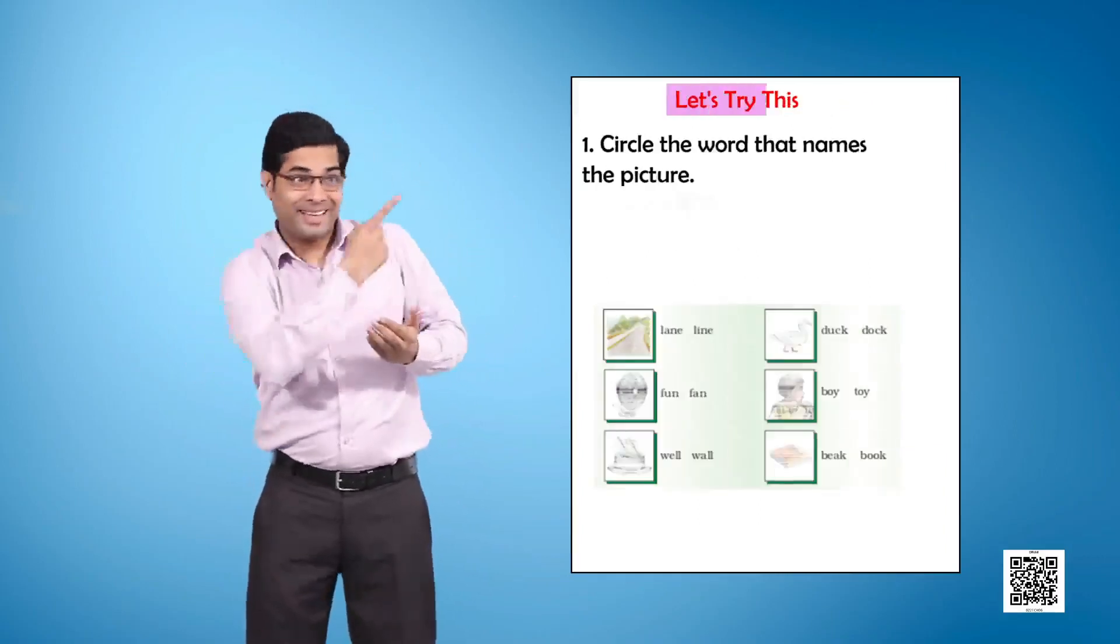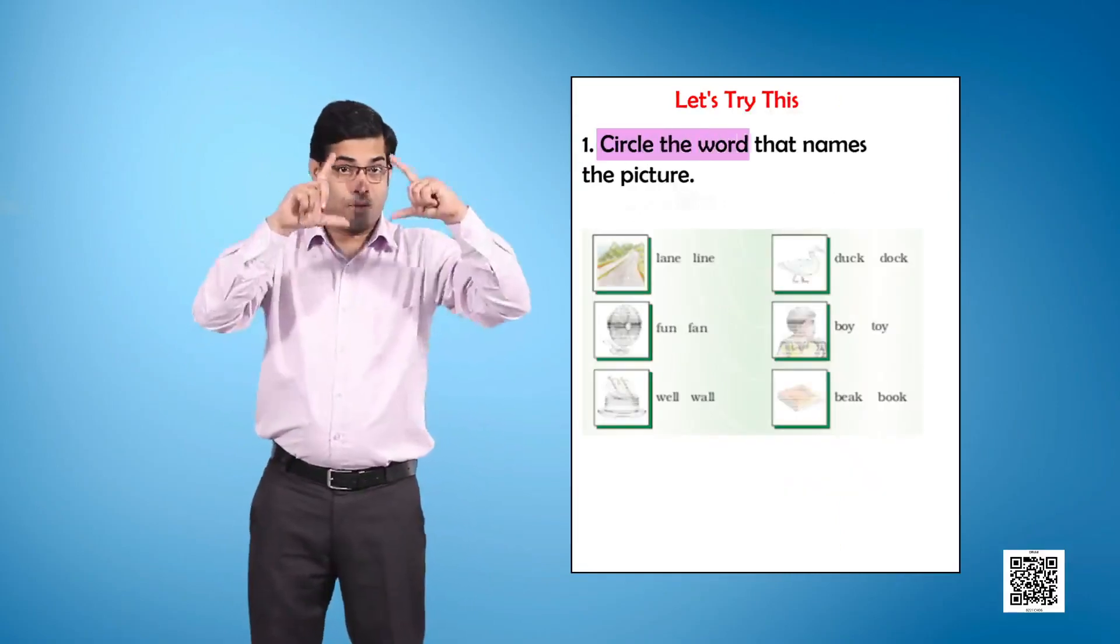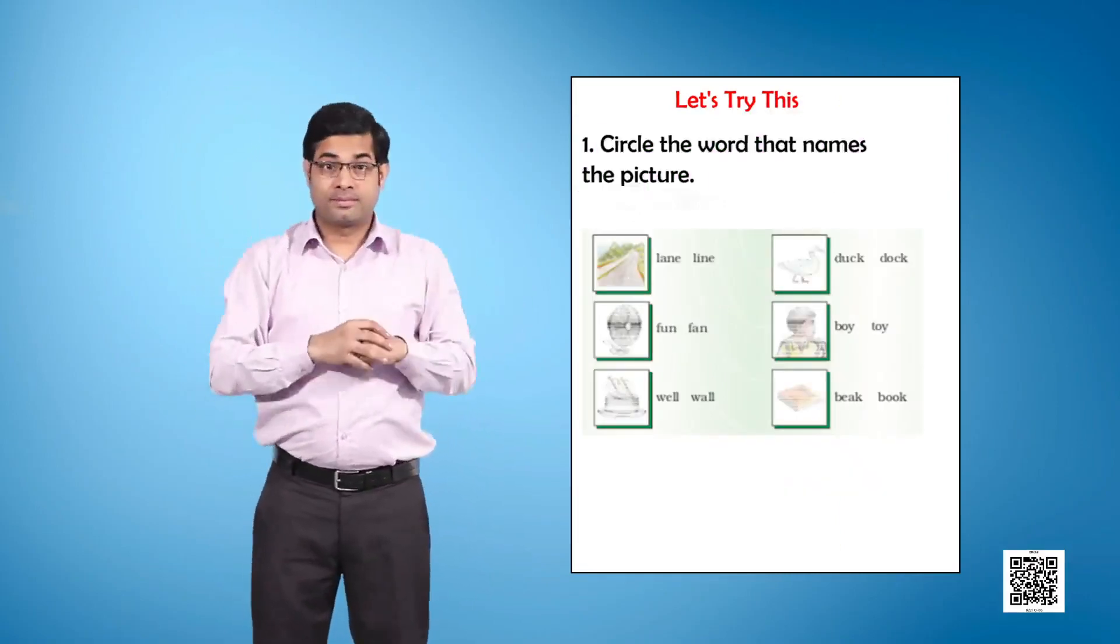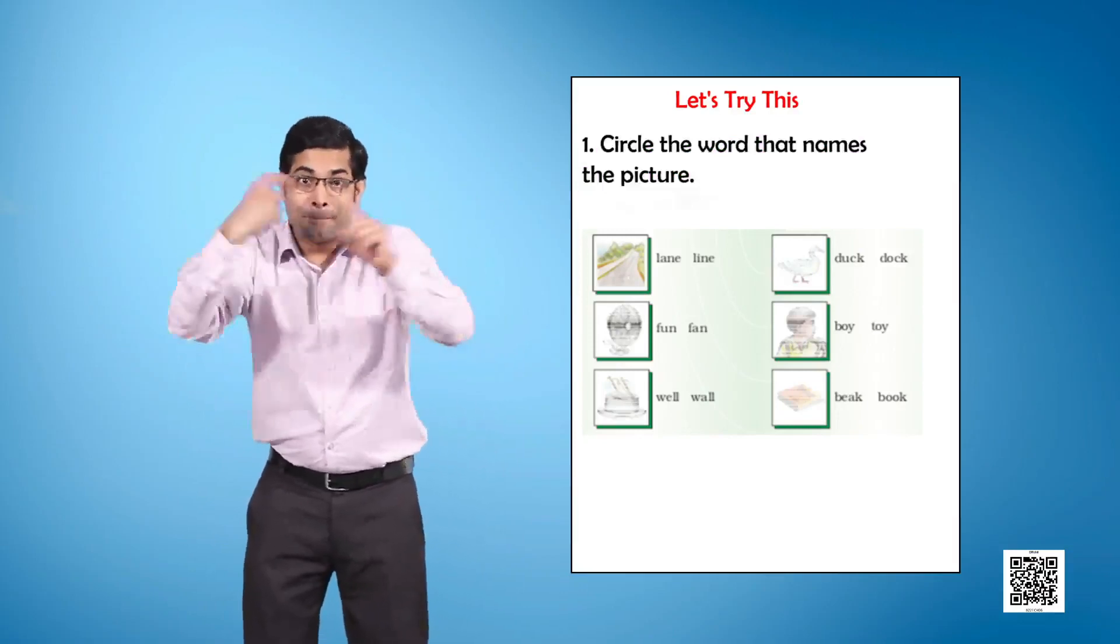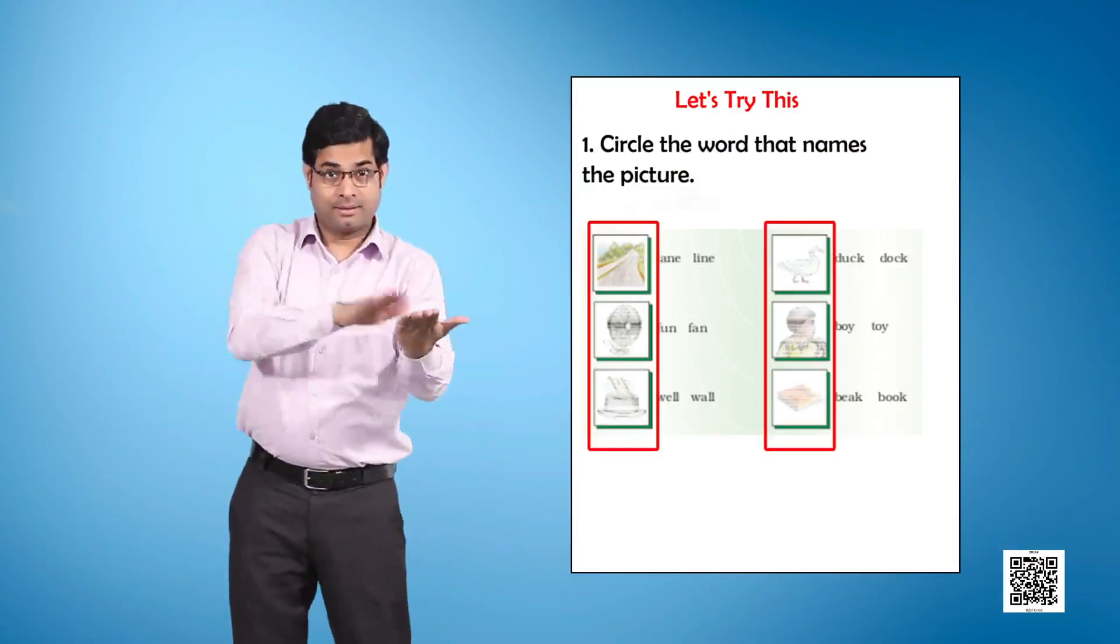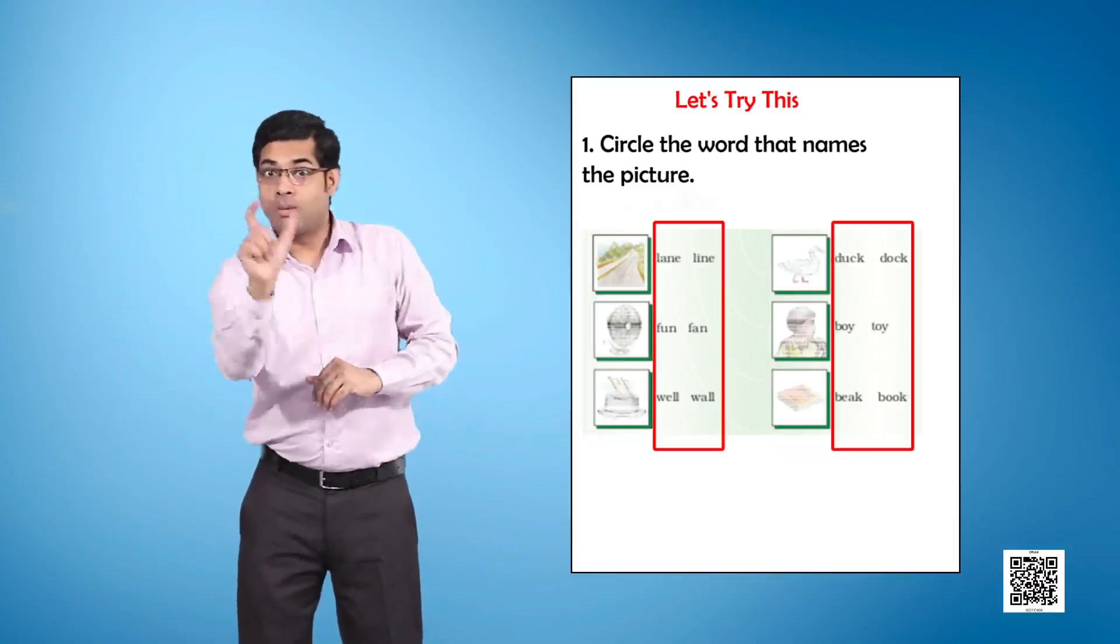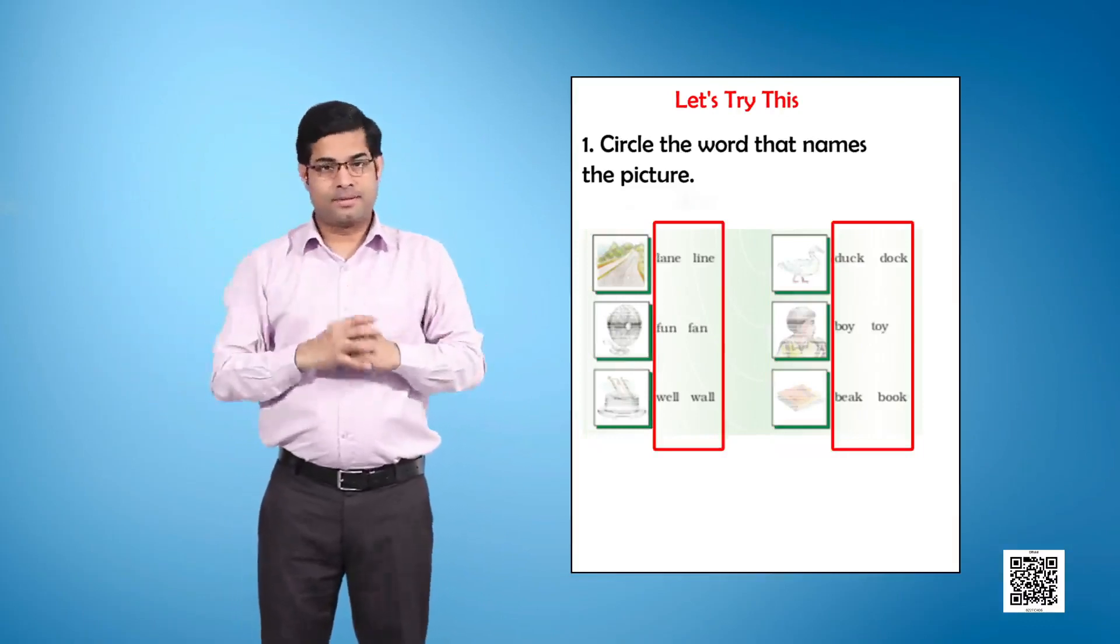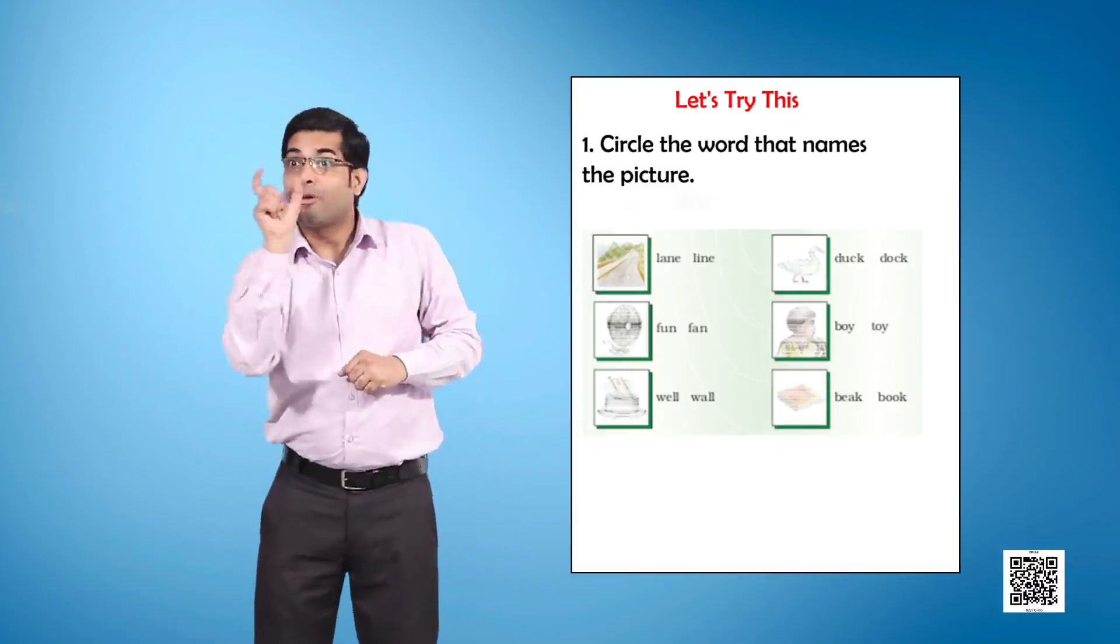Let's try this. 1. Circle the word that names the picture. On the left there are pictures, and on the right side we have some words. You have to choose the right word that depicts the picture.